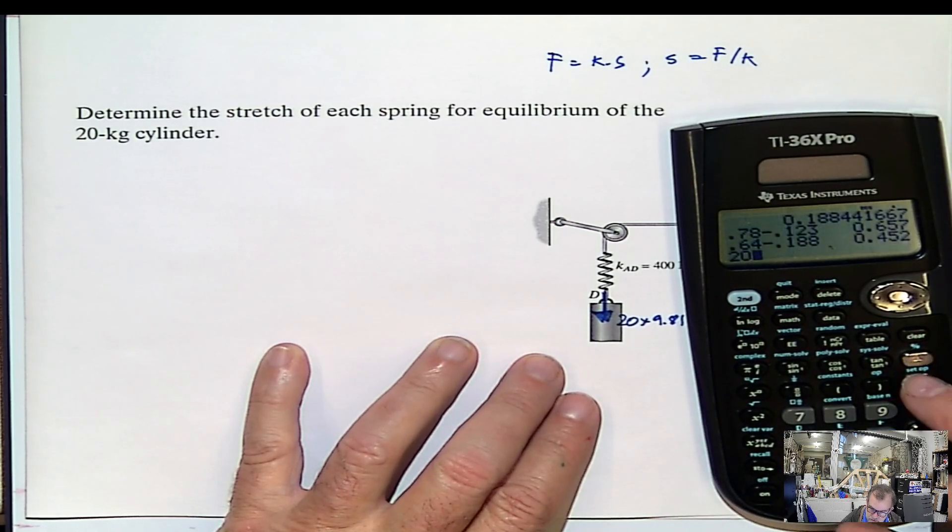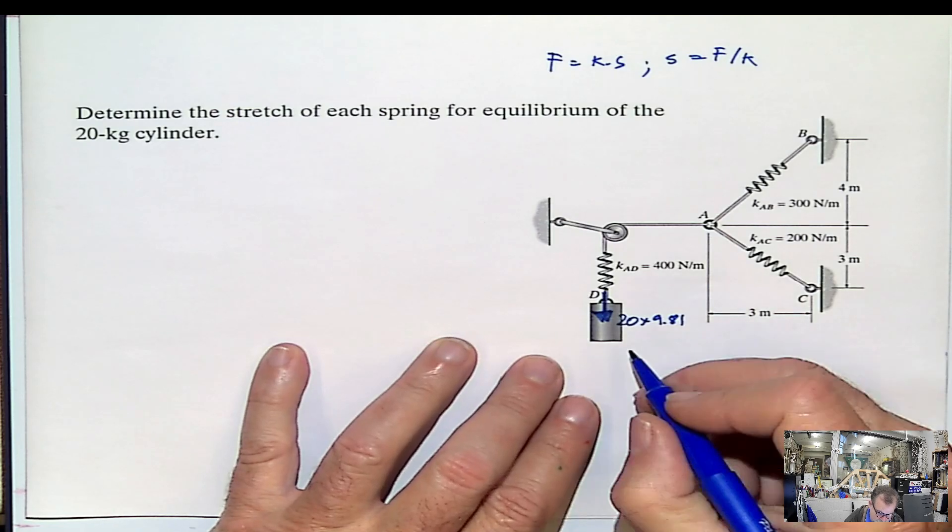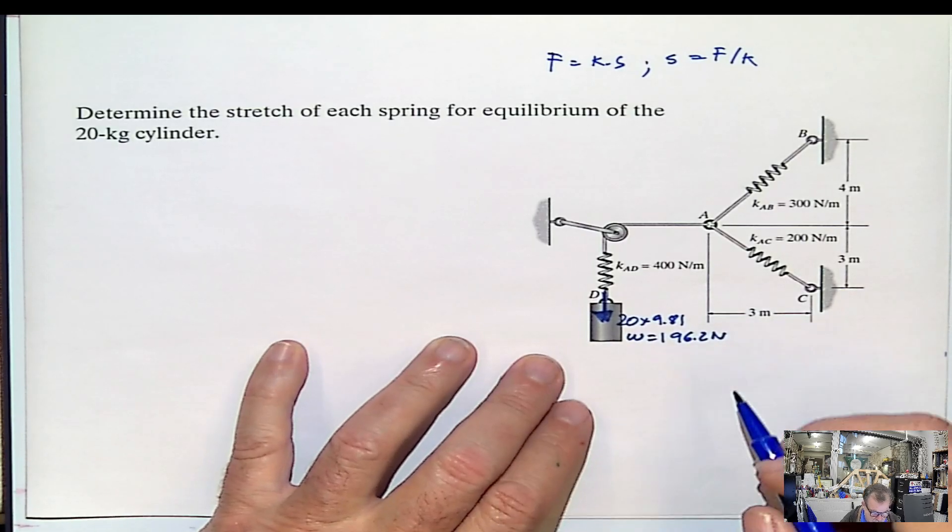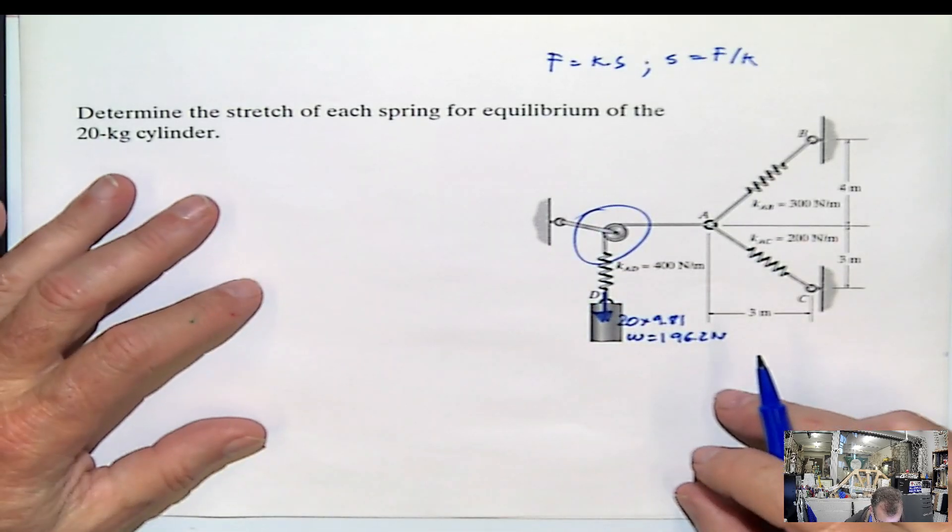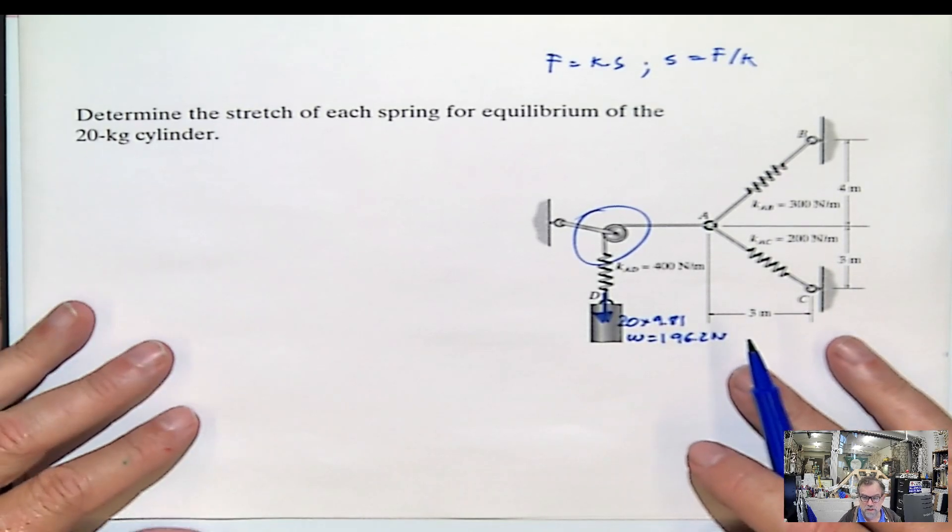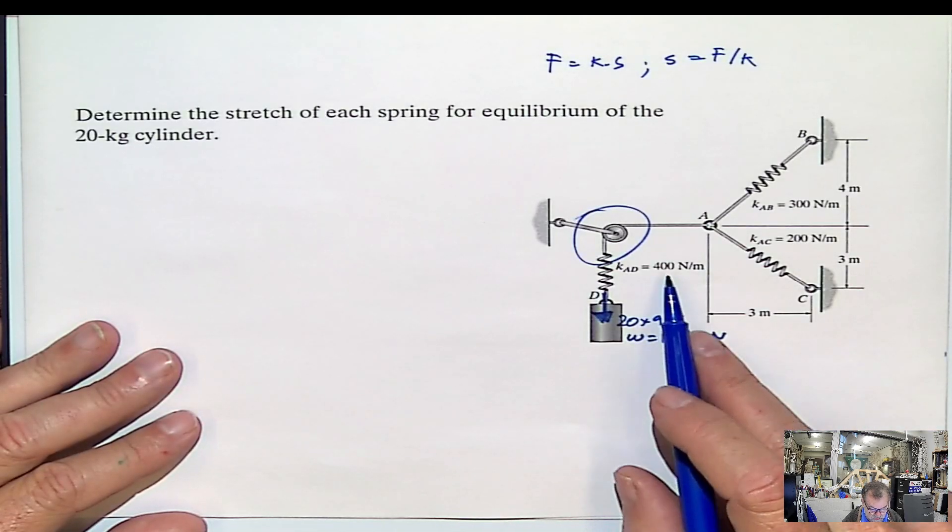20 times 9.81 is 196.2 newton. And now we start. Look, we have this. If we want to calculate immediately the first stretching of the spring, we can. This is the force. This is the constant.